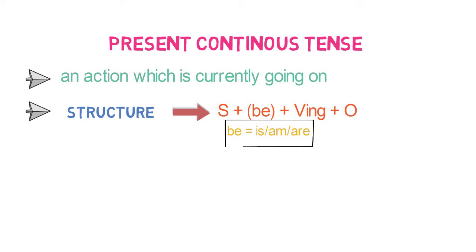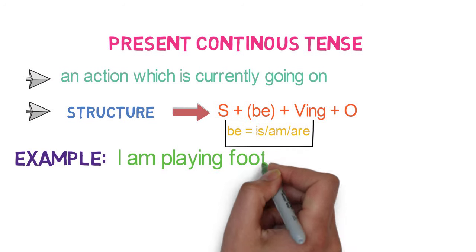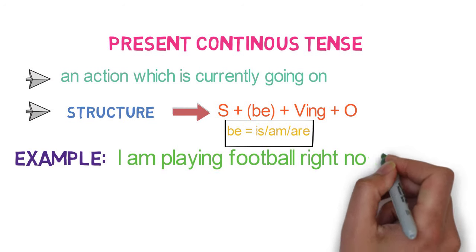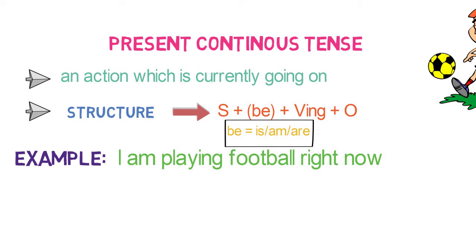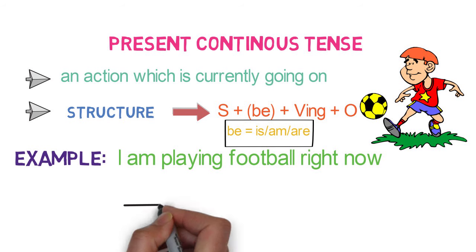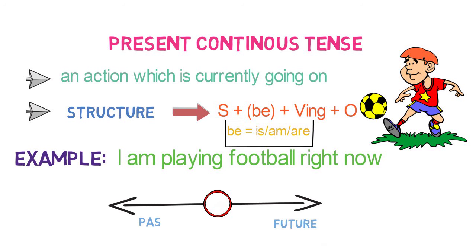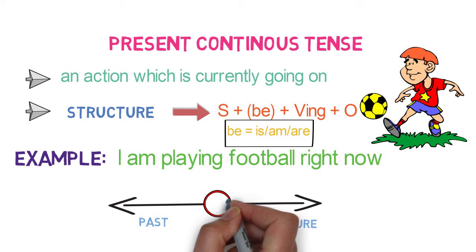For example: 'I am playing football right now.' Here, my action of playing football is still going on and has not yet completed. So in the timeline, it will appear exactly in the circle which indicates that the action is going on right now.